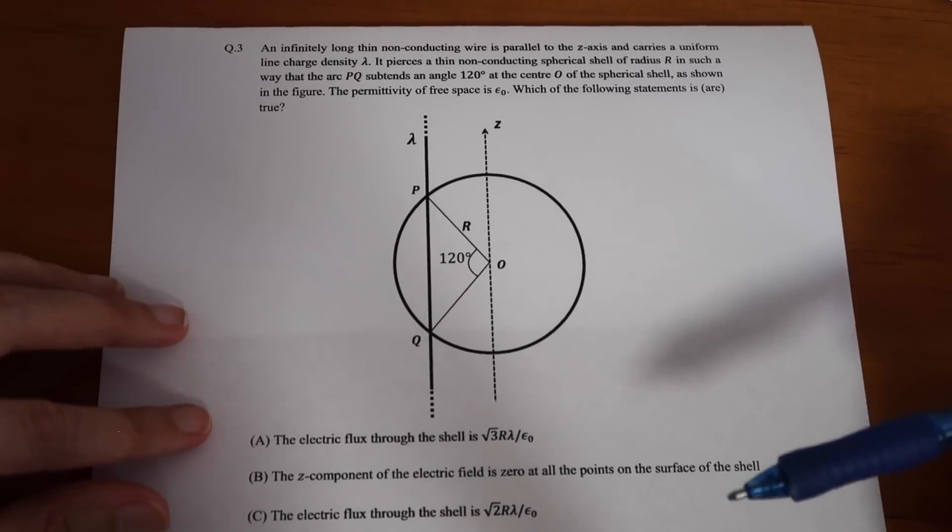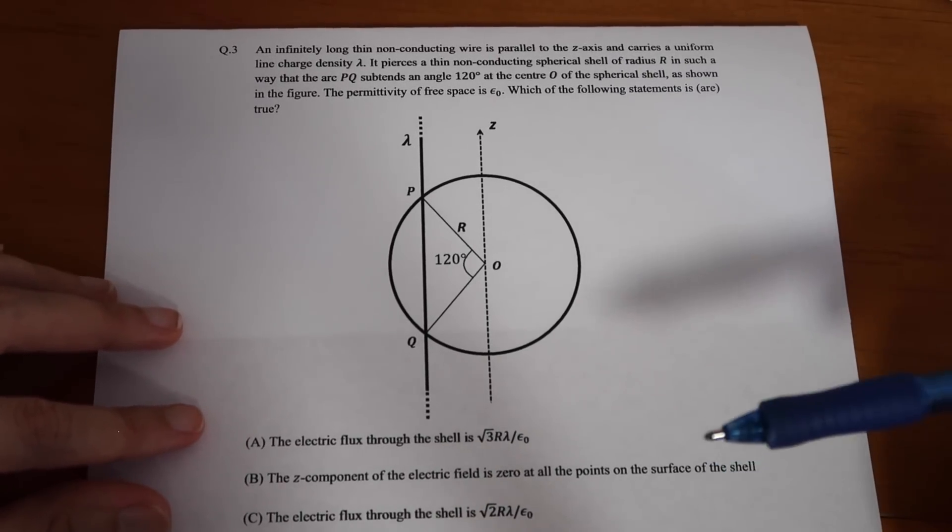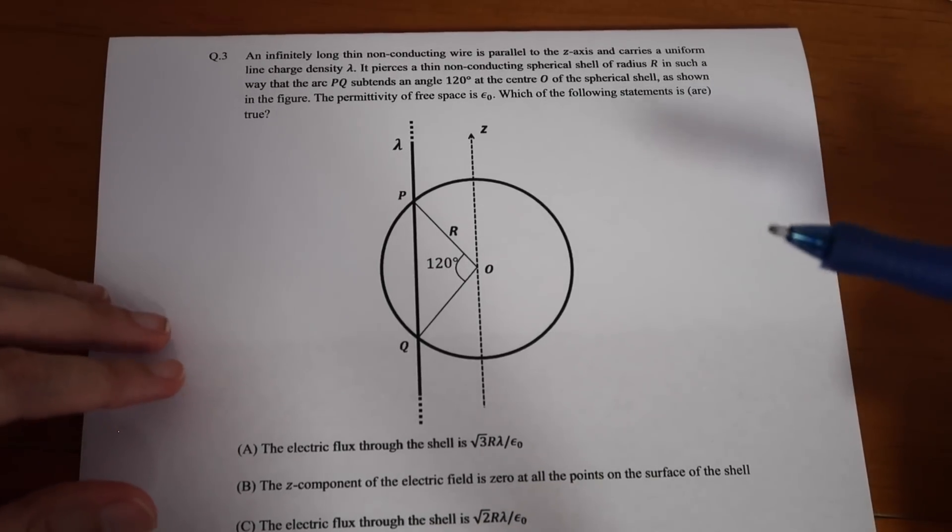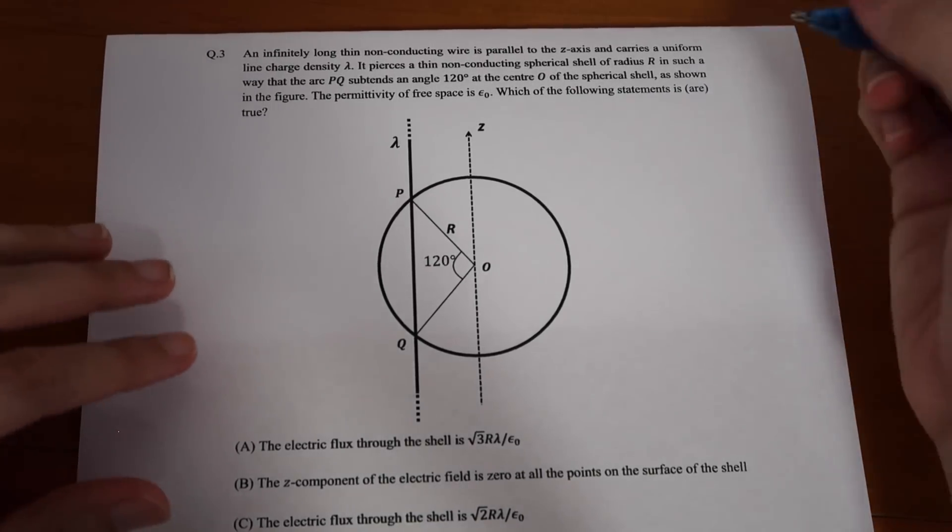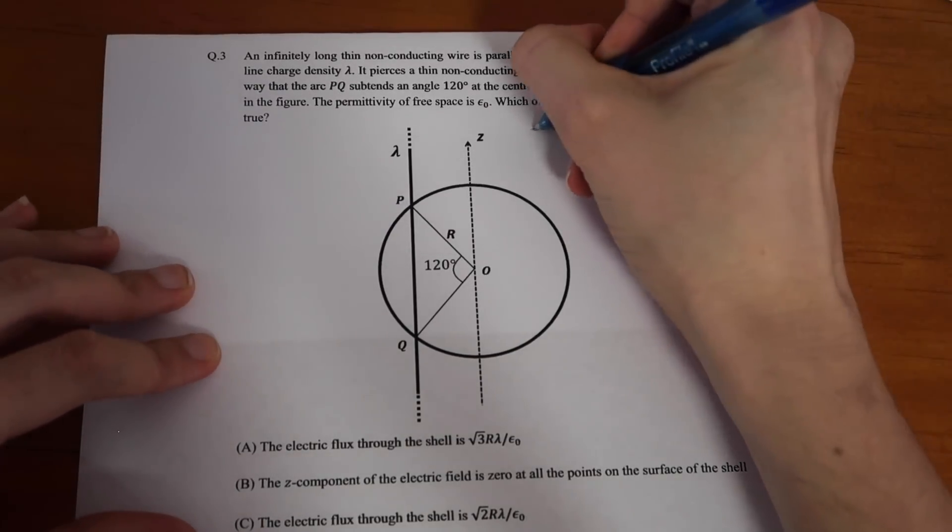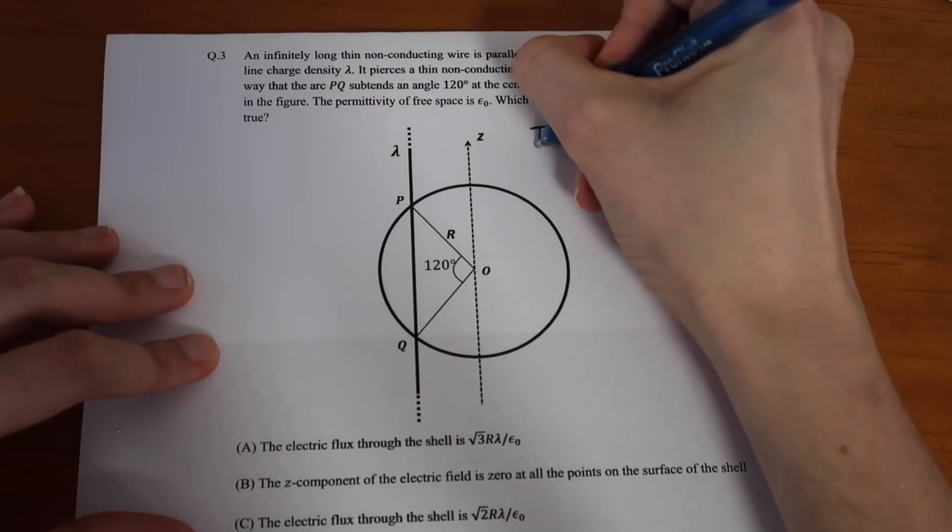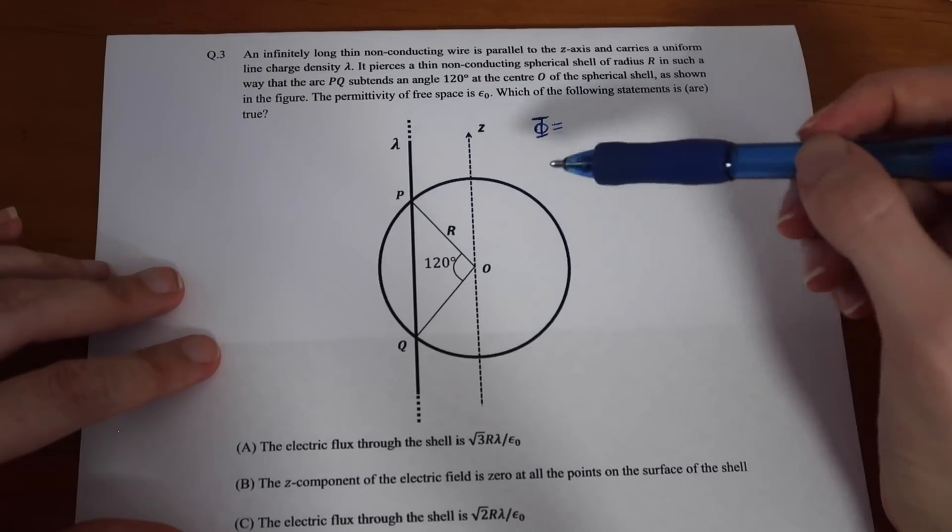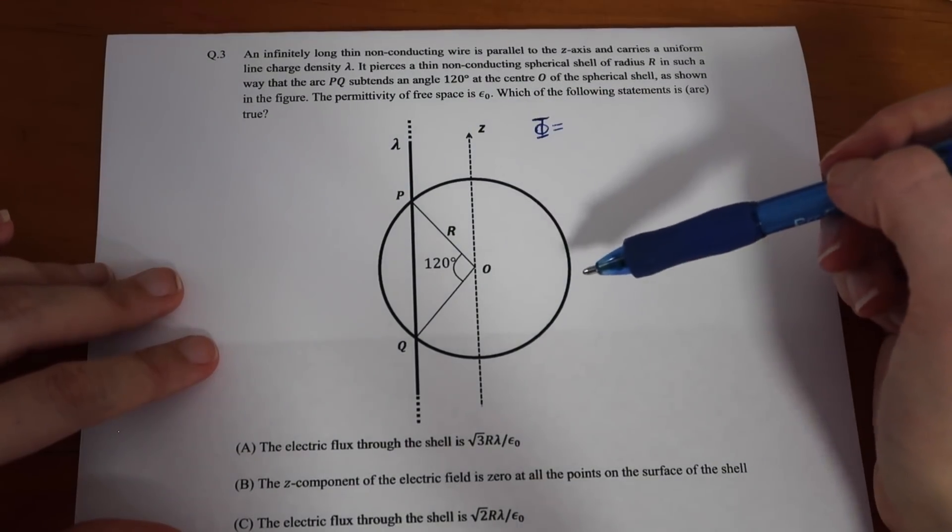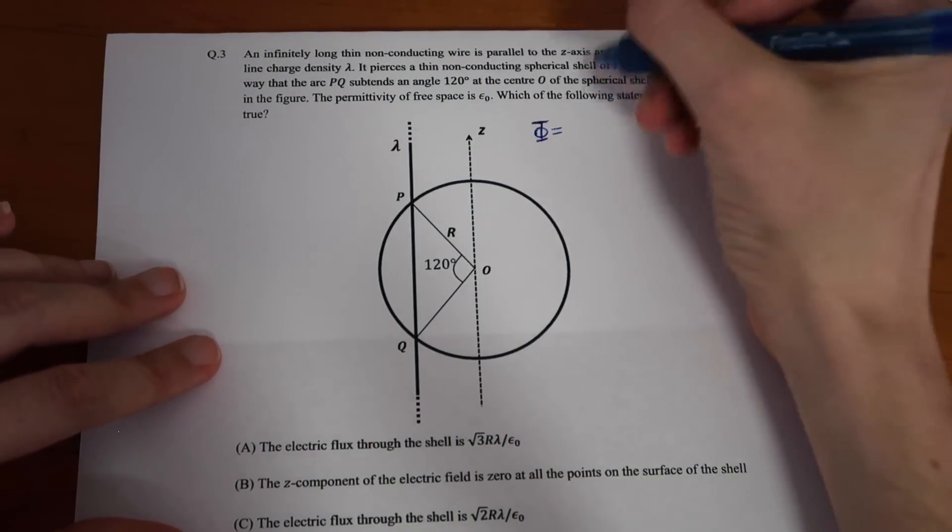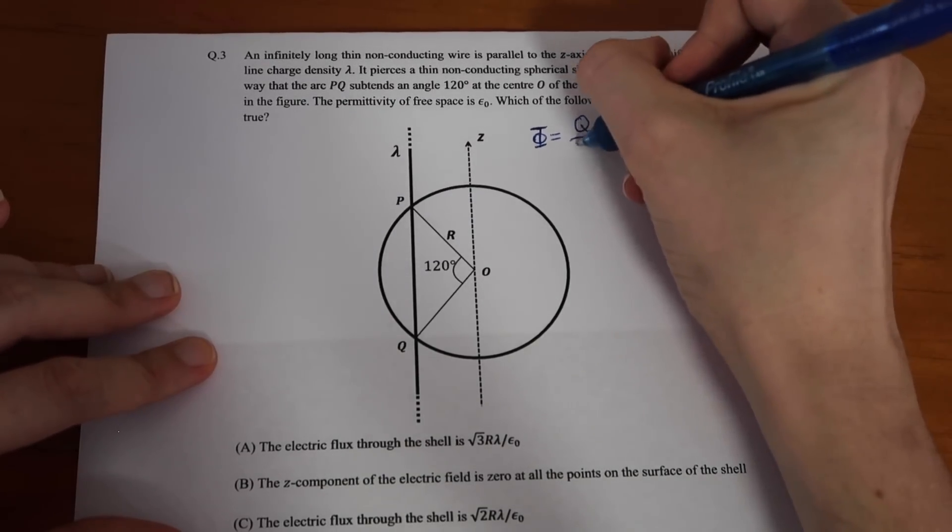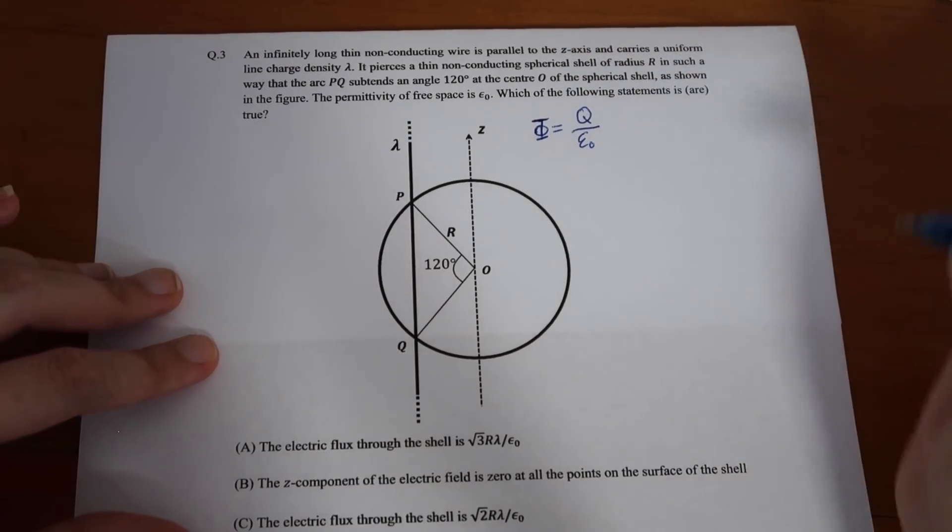Now, the electric flux is the rate of flow of electric field through a given area, and usually we find the electric flux through something called Gauss's law. So, if we are to denote our electric flux with this symbol, then what Gauss's law states is that the total electric flux out of a closed surface is equal to the charge enclosed divided by the permittivity. So, in this case, that's epsilon-nought.